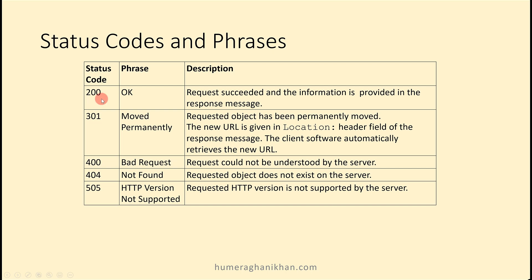Status code 200 means the request succeeded and the information is provided in the response message. Status code 301 means 'Moved Permanently' — the requested object has moved permanently, and the server sends the new location; it is then the client's job to retrieve the object from that new location. Status code 400 means 'Bad Request' — the server cannot understand the request. Status code 404 means 'Not Found' — the object does not exist on the server. Status code 505 means the HTTP version is not supported by the server.